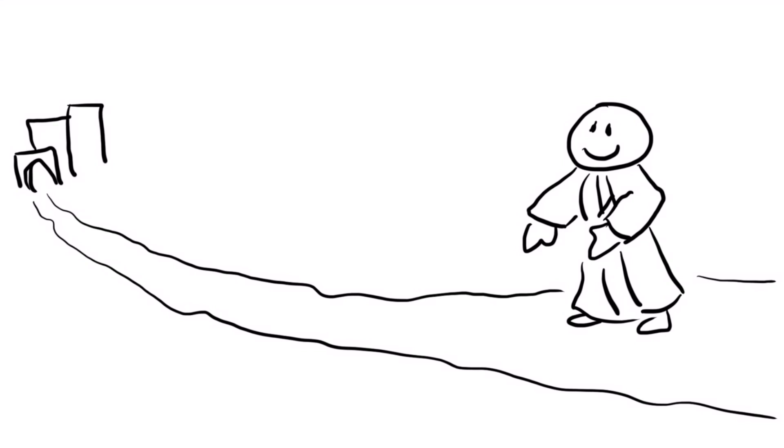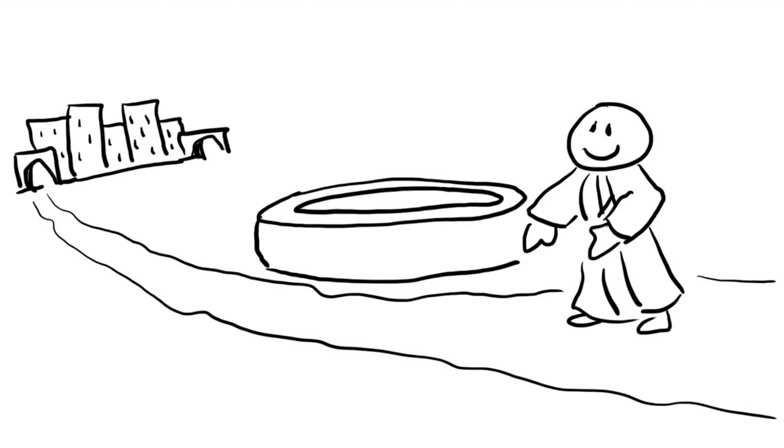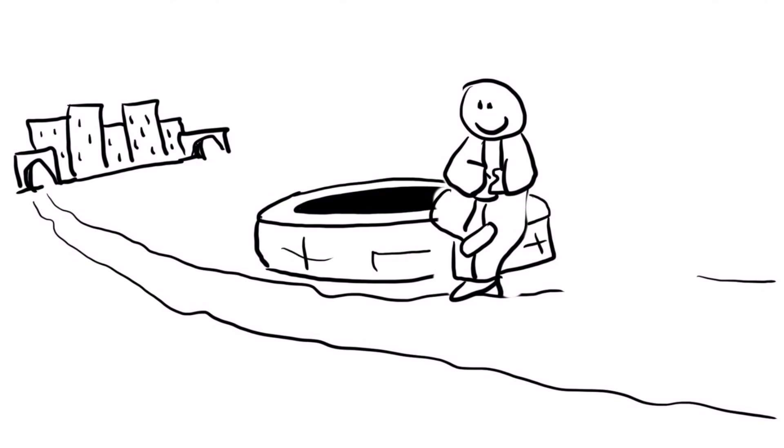Jesus had to go through Samaria. He came to a town in Samaria called Sychar. It was near the piece of land Jacob had given his son Joseph. Jacob's well was there. Jesus was tired from his journey. So he sat down by the well. It was about noon.